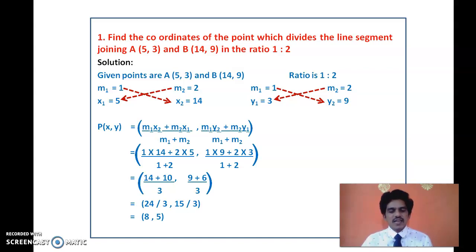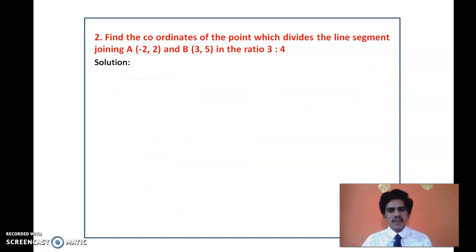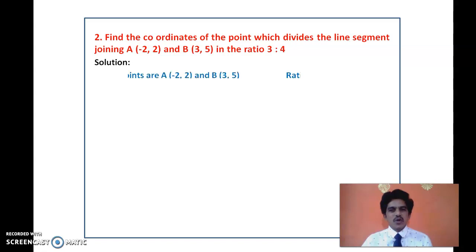This is the point on the coordinate plane which divides the line segment joining A and B in the ratio 1:2. If you use a different ratio, like 2:3 or 3:4, you get a different answer, because each point divides the line segment in its own ratio. For further understanding, let us take one more problem: find the coordinates of the point which divides the line segment joining A(-2, 2) and B(3, -5) in the ratio 3:4.